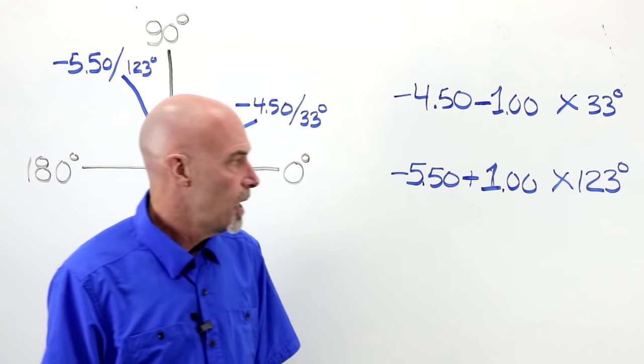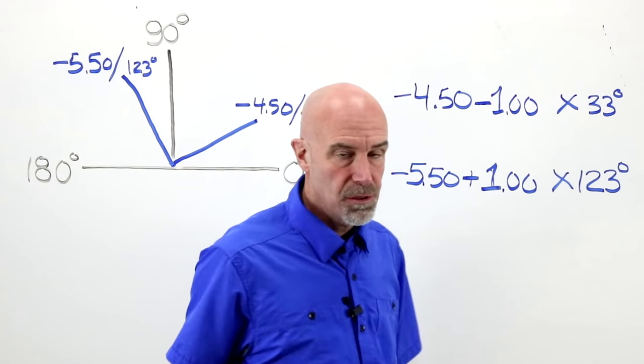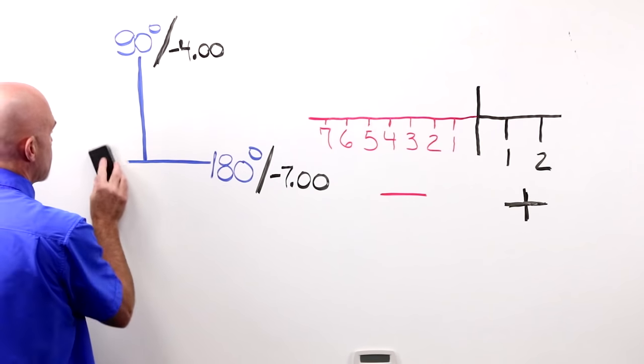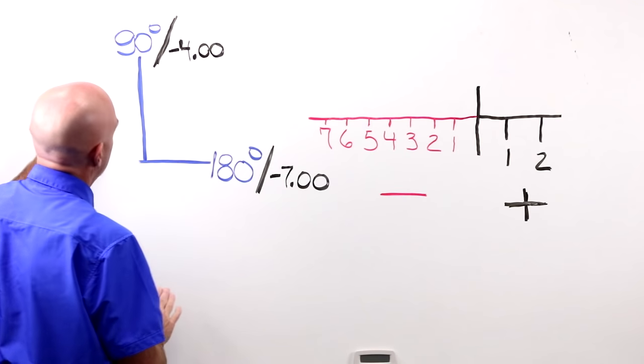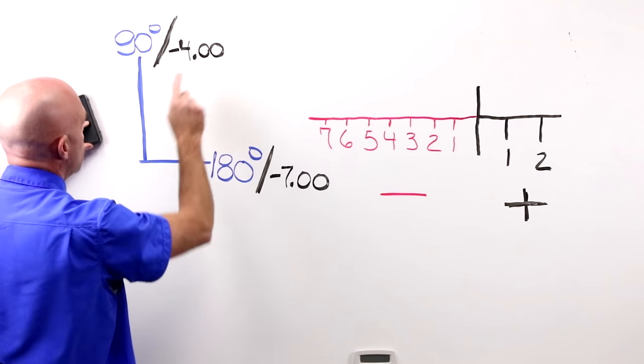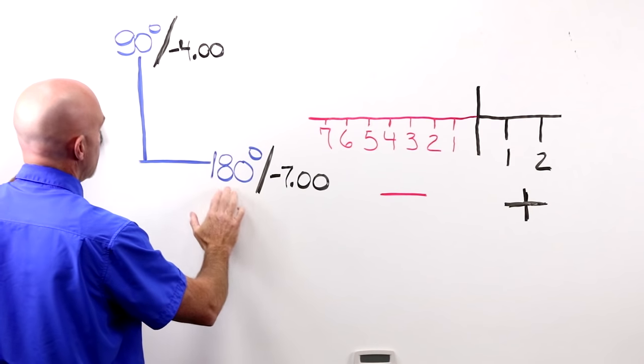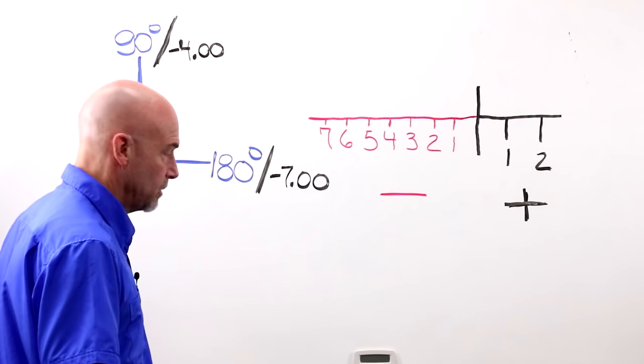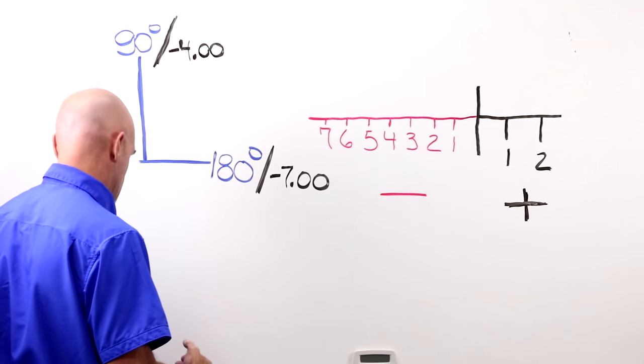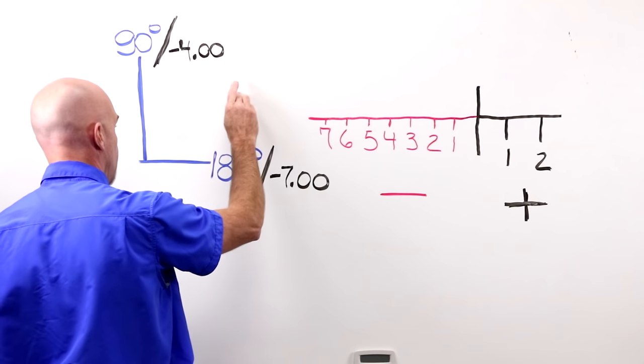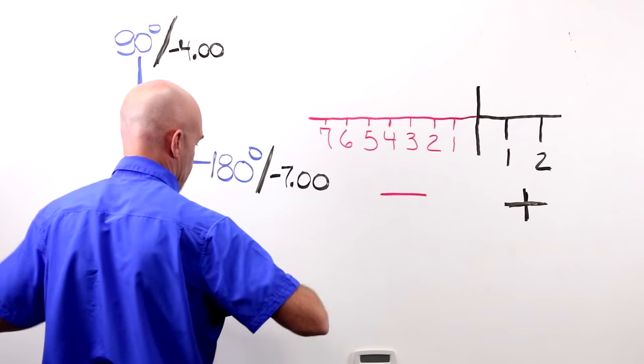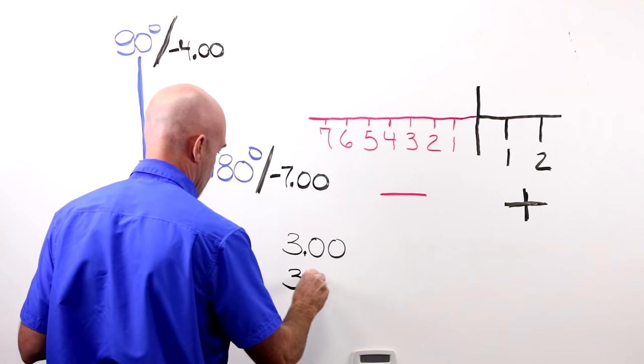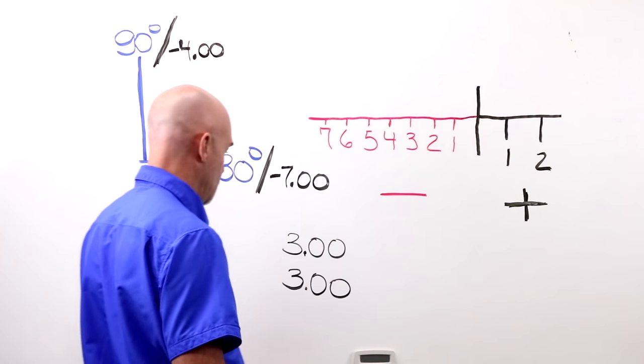Really brief review of the number line coming up, and then we can move on. If I gave you this optical cross, and I told you that at 90 degrees we have minus four, and at 180 degrees, 90 degrees away, we have minus seven, and you were solving for a script, you wanted to figure out your cylinder value, you're going to count the distance between those two points. I've got minus four, five, six, seven. I've got three diopters of cylinder. The amount of power between the two principal meridians.